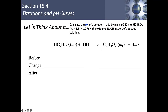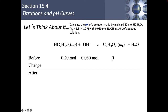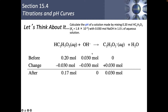Let's start filling things in. Before: we have 0.2 moles of acetic acid, 0.03 moles of OH⁻, and 0 acetate ions. It's a one-to-one relationship in our balanced equation, so I subtract these from each other and add that quantity of acetate ions. The OH⁻ goes to zero — it totally reacts. My acetic acid goes down by a little bit, leaving 0.17 moles. My acetate ion goes up by 0.03 moles.